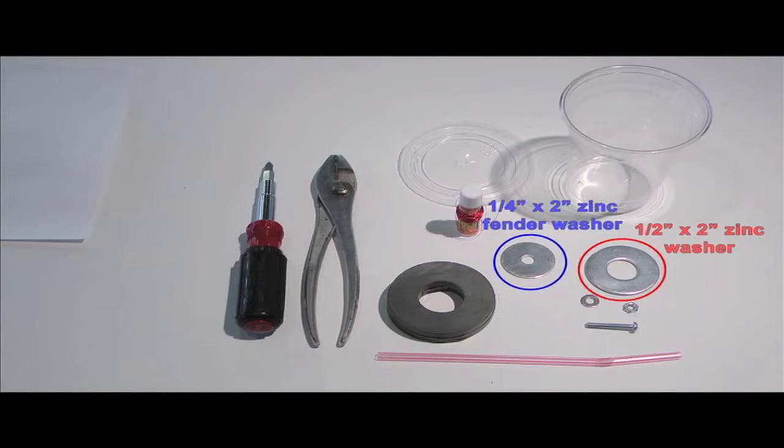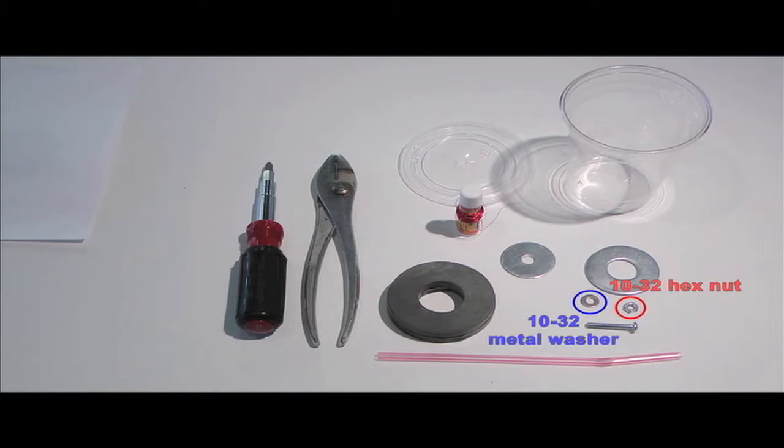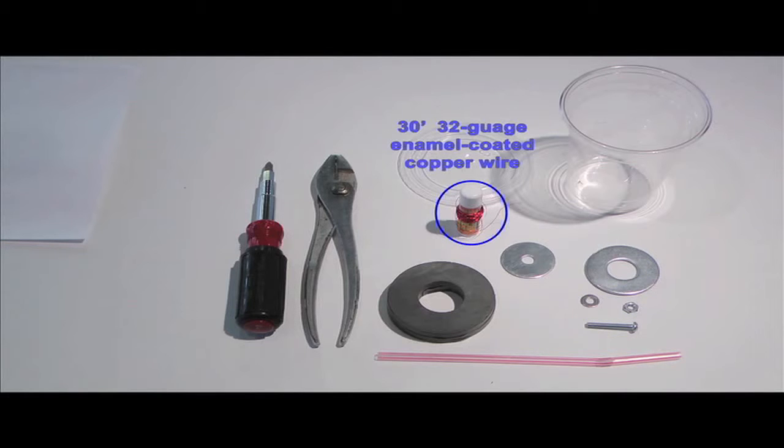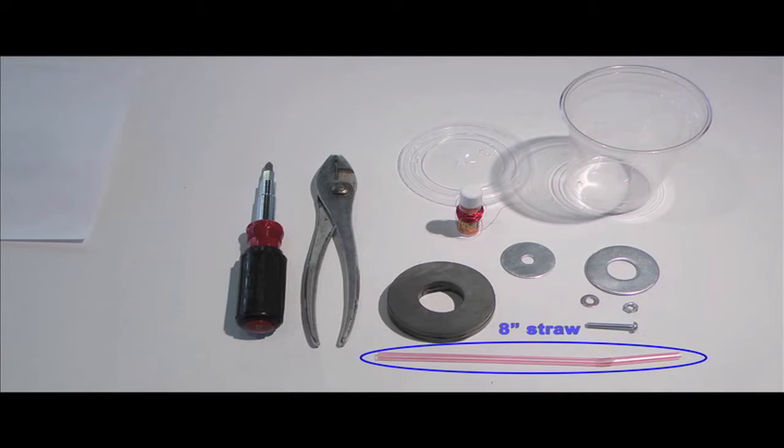In addition, you'll need one quarter-inch by two-inch zinc fender washer, one half-inch by two and a half-inch zinc fender washer, one 1032 metal washer, one 1032 hex nut, one 1032 by one socket head cap screw, 30 feet of 32 gauge magnet wire wrapped around something tubular, we used a tube of chapstick, a plastic straw, and a 20 ounce plastic cup with a lid.